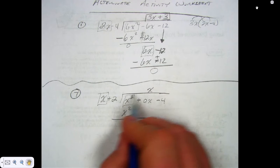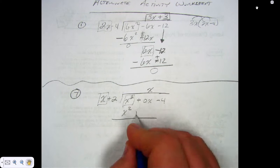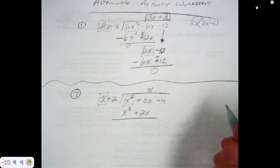x times x is x squared. What else do I have to multiply, though? x times what? 2, which gives me a positive what?